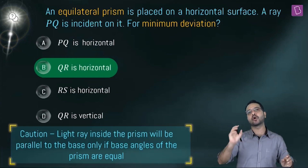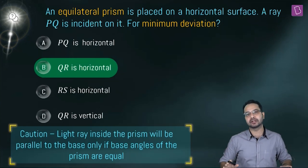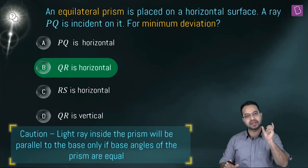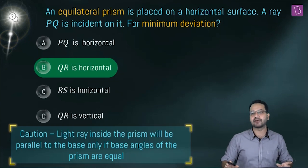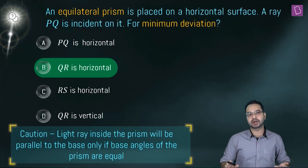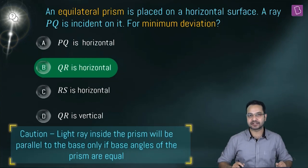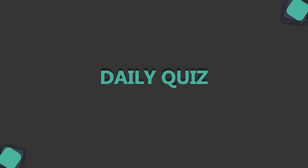The angle of incidence is always going to equal the angle of emergence — that is the basic principle to remember about minimum deviation.